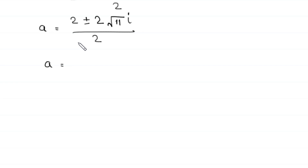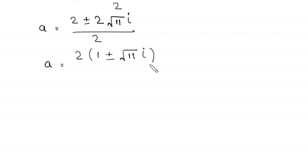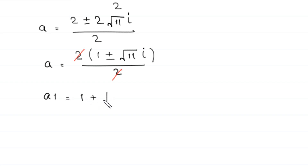So a is equal to 2 plus or minus, and square root of 4 is 2, giving 2 times square root of 11 times i, divided by 2. From the numerator we can factor out 2 as a common factor, leaving 1 plus or minus root 11 times i, divided by 2. This 2 cancels with the denominator. From here we get two values of a: a1 is equal to 1 plus root 11 i, and a2 is equal to 1 minus root 11 i.